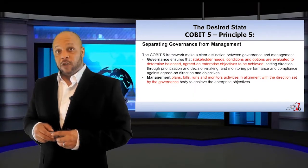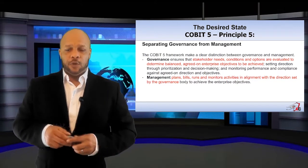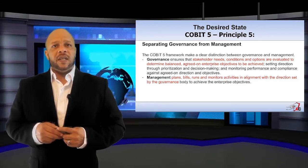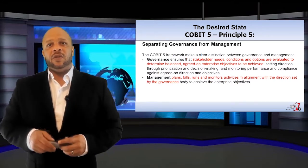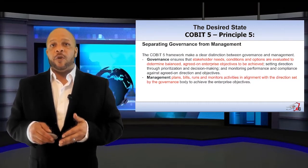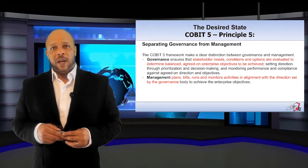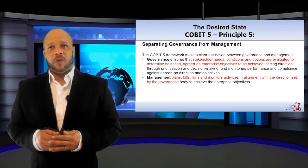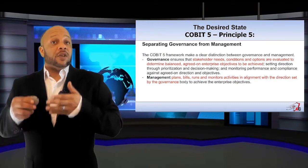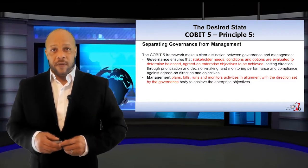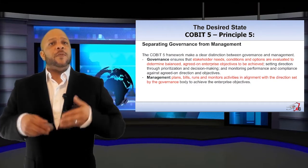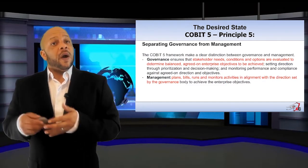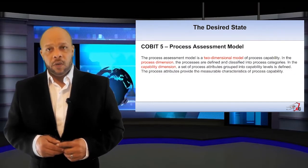The fifth COBIT principle is the separation of governance from management. Each has a role to play, but they differ in execution. Governance ensures that stakeholder needs, conditions, and opinions are evaluated to determine balance and agreed-upon enterprise objectives. Management handles the plans, the monitoring activities, all with the goal of alignment with governance.